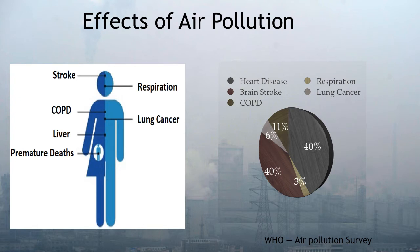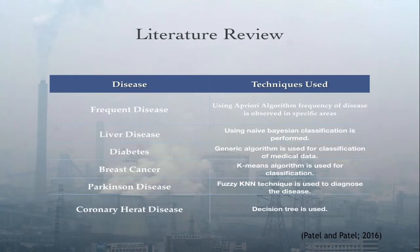From the pie chart, we can see that 3% is respiratory disease, stroke is 40%, lung cancer is 6%, COPD is 11%, and heart disease is 40%. Here I am going to work on heart disease.